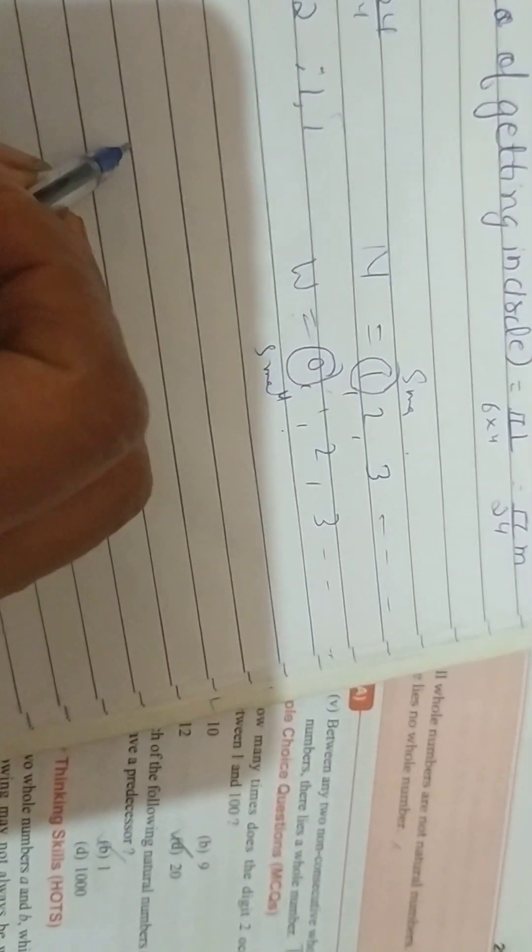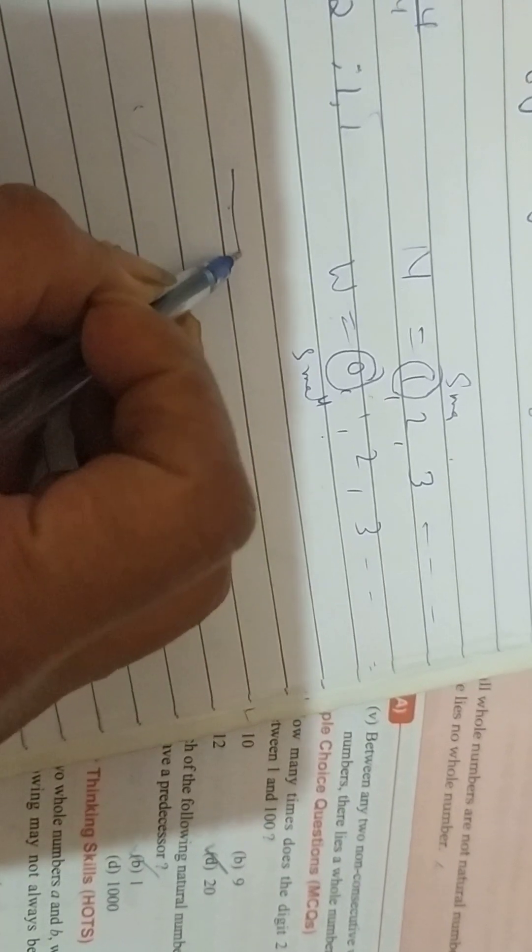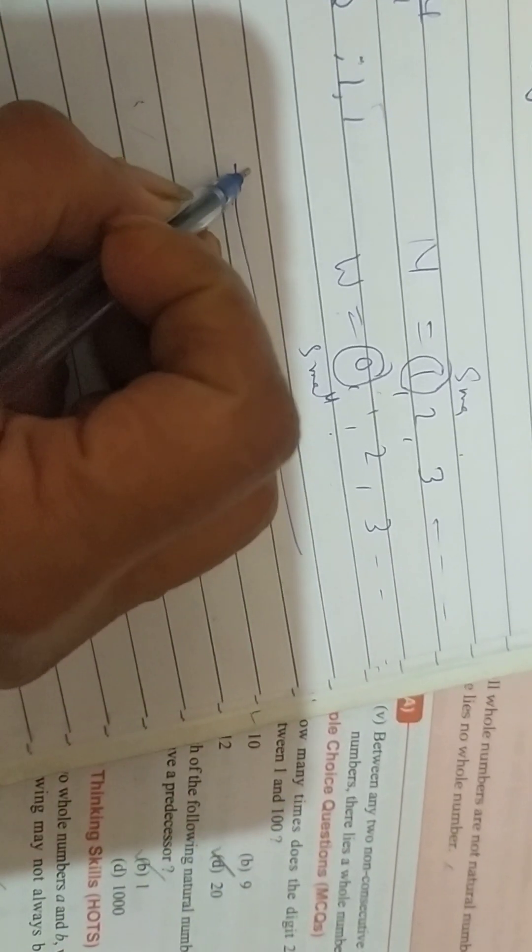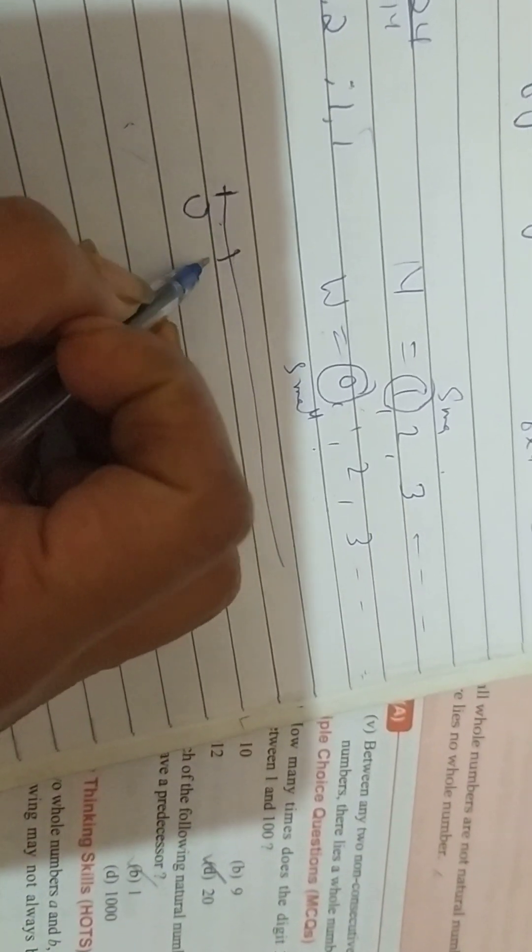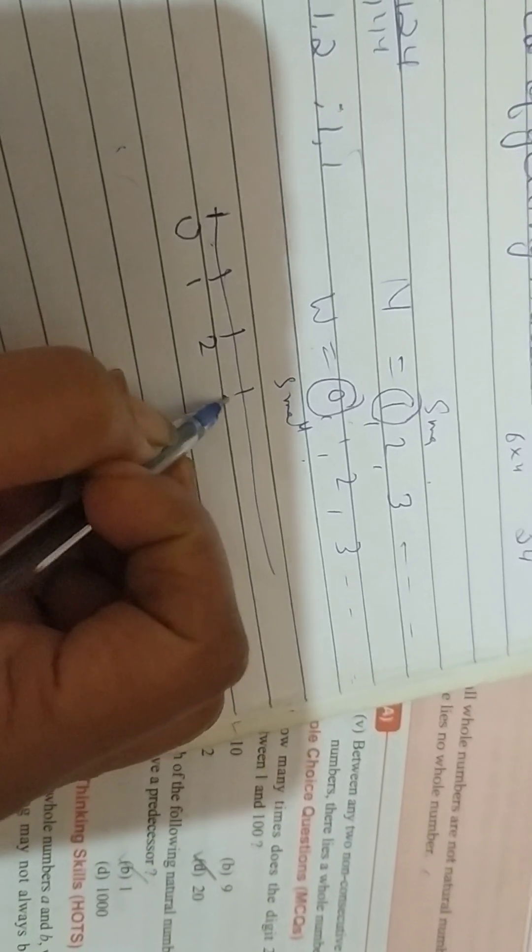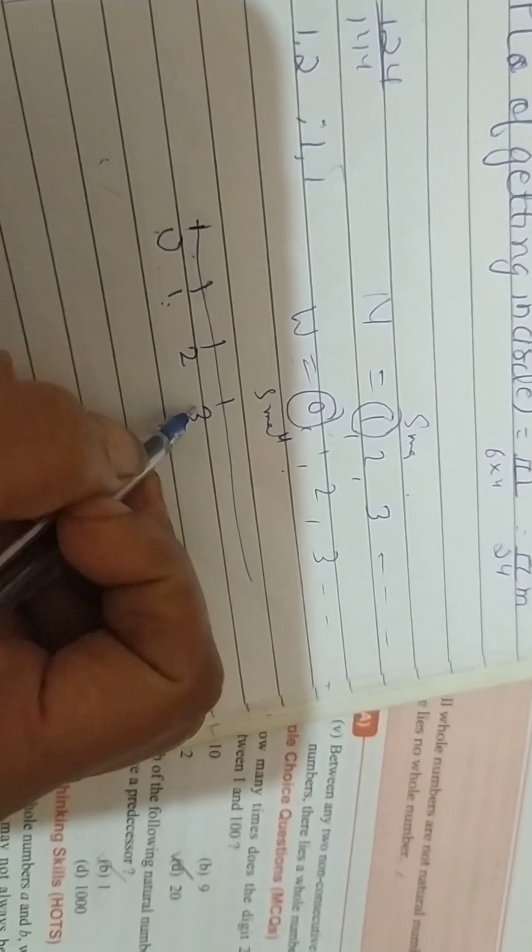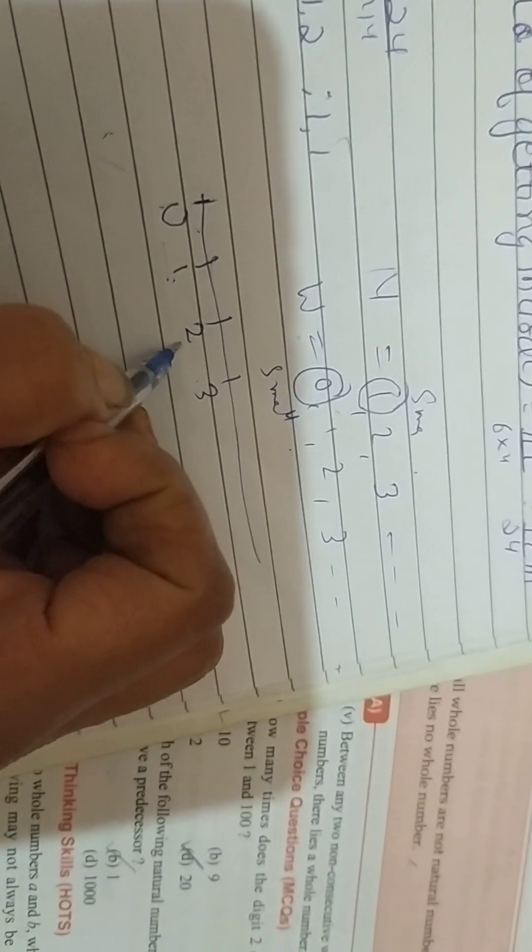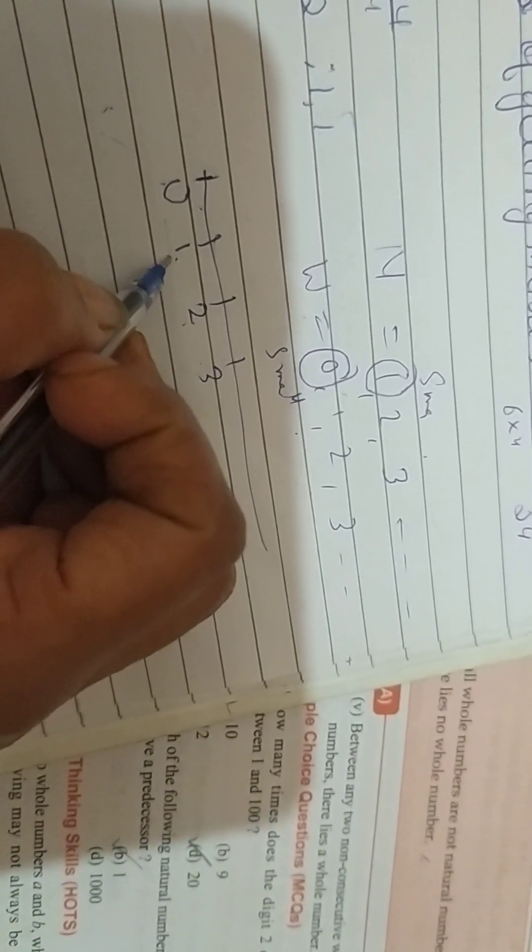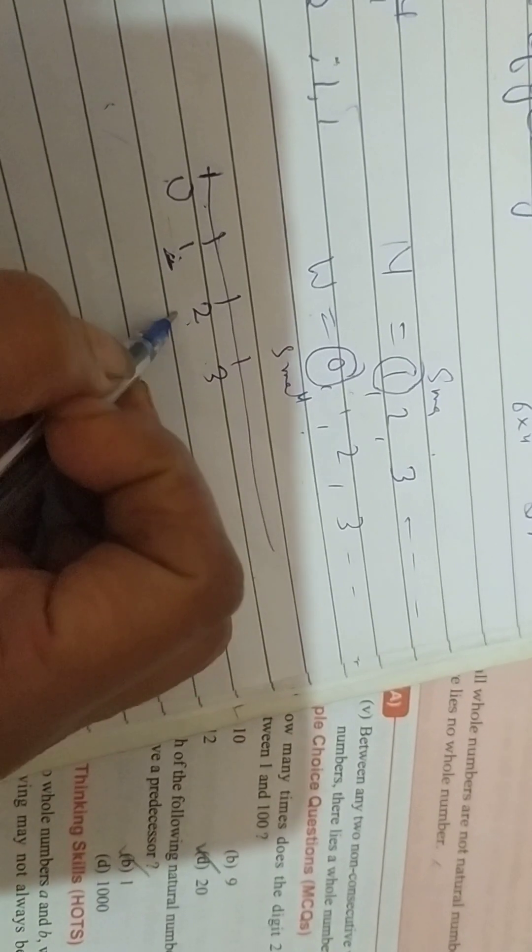So whenever we will make a number line, we will start from 0 always. Always the number which will come, 1 is greater than 0, 2 is greater than 1, 3 is greater than 2. It means always the number which will come to the right of the number is always greater.